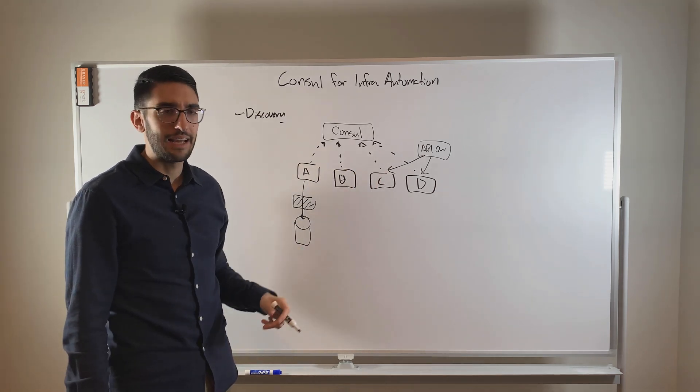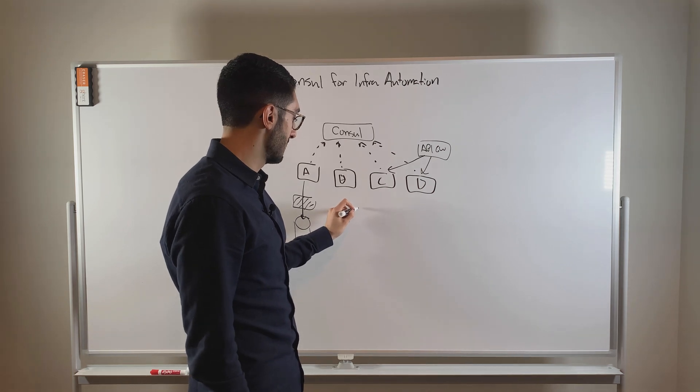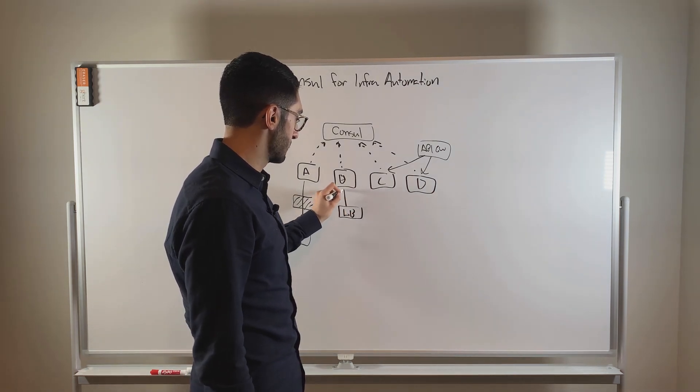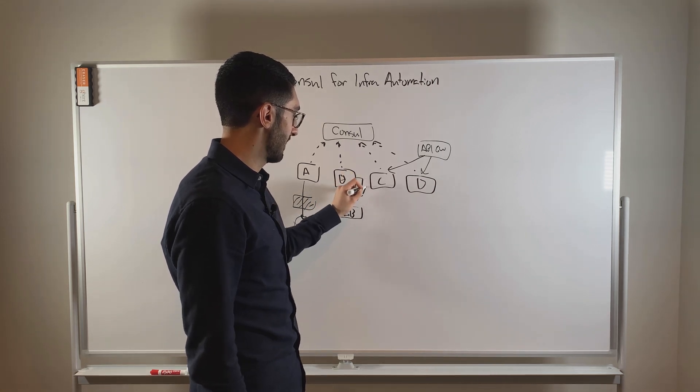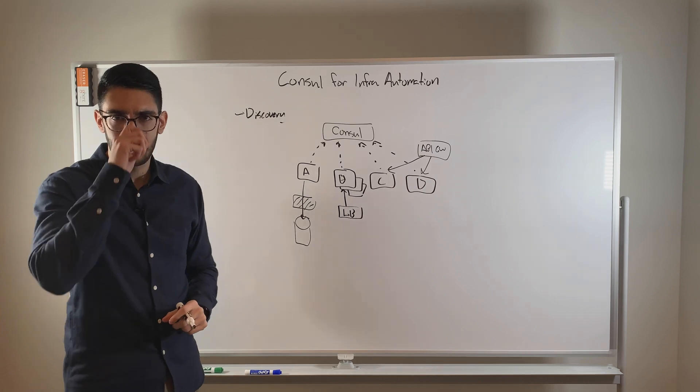So the reality is we're going to have a bunch of different middleware that exists. It might be firewalls, it might be API gateways, there might be load balancers. Service B might be very popular, and lots of services are reaching it. So we have a load balancer that's fronting traffic coming in. So there's lots of these different middleware appliances that exist within the network.